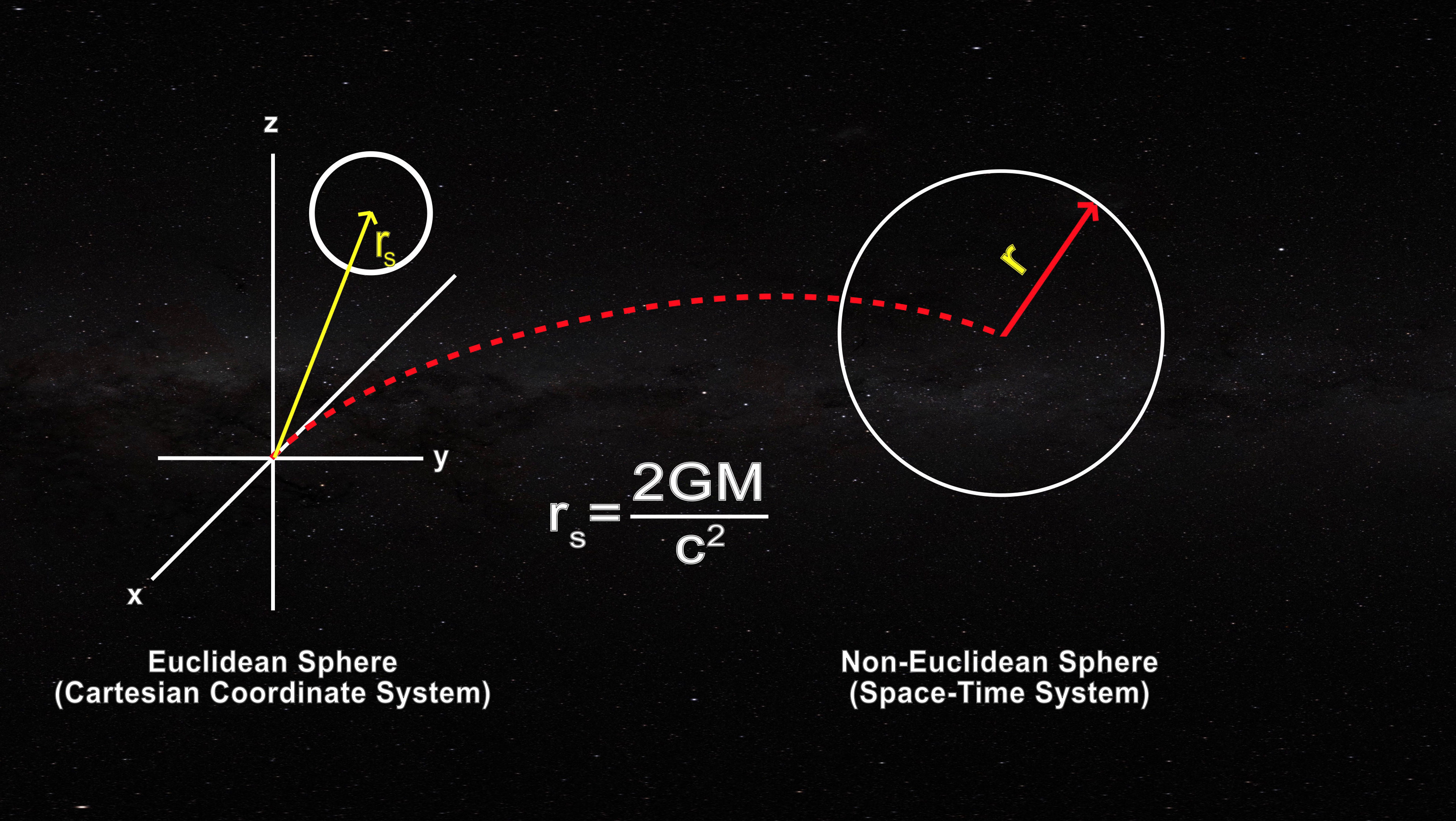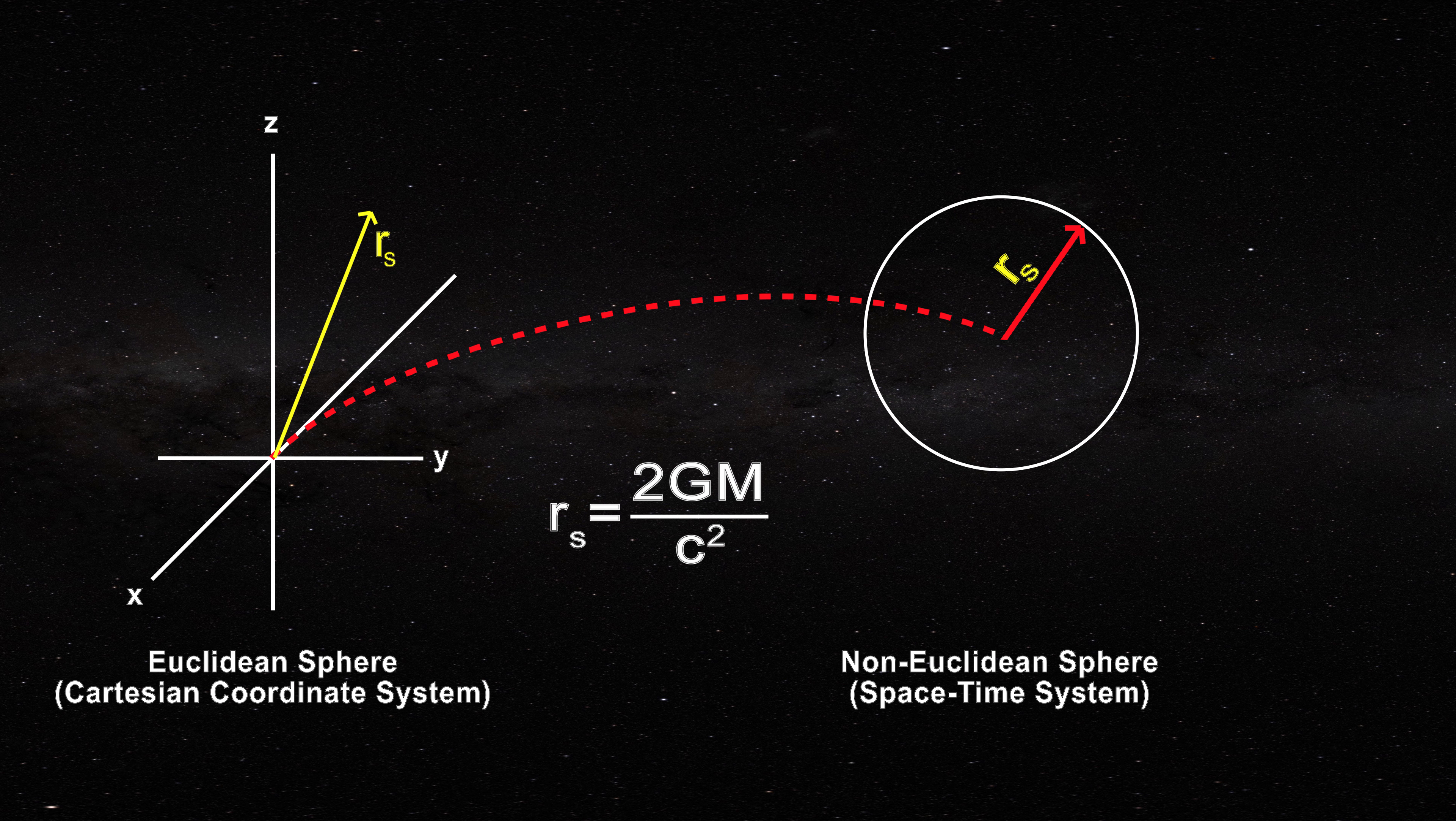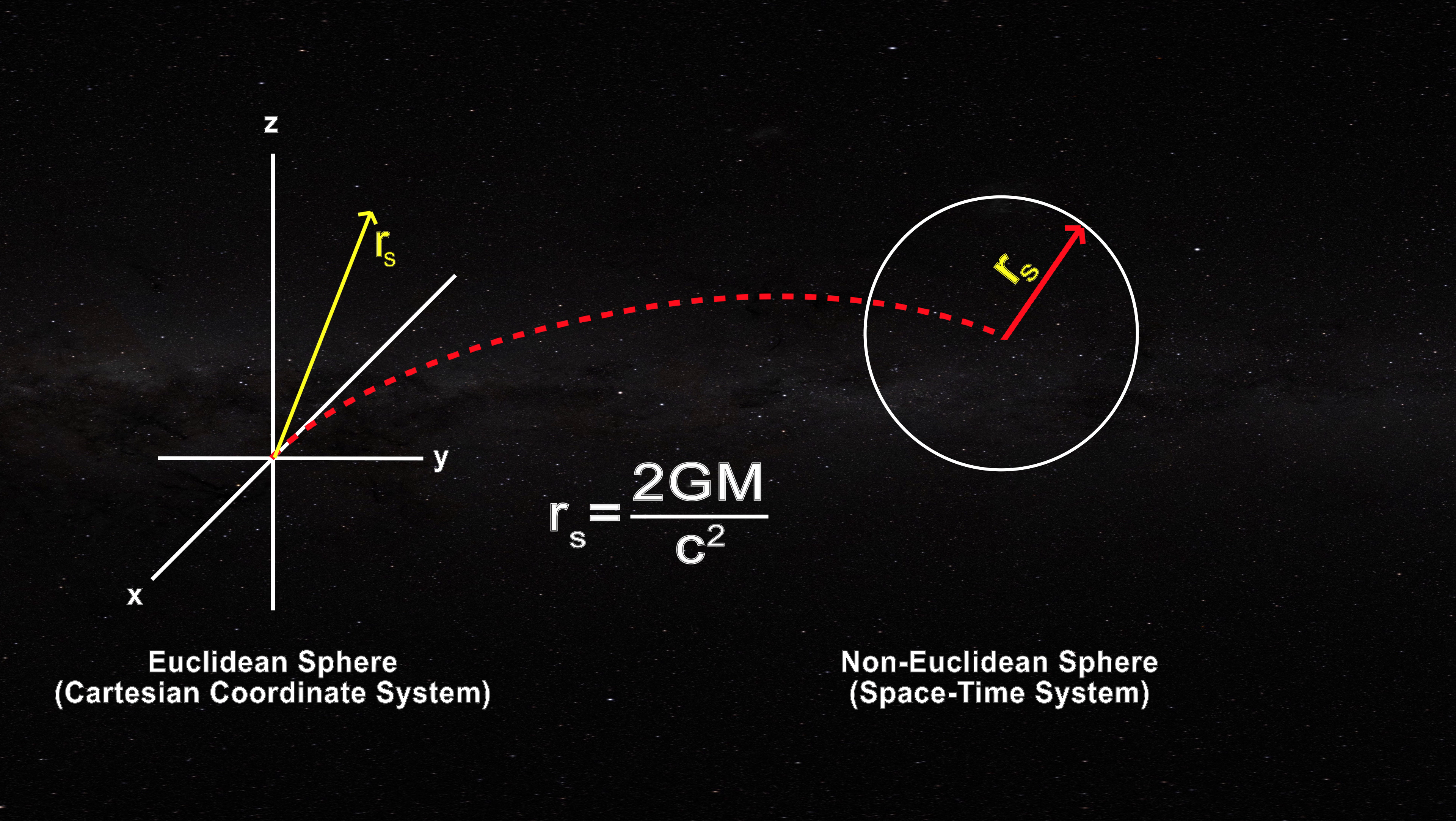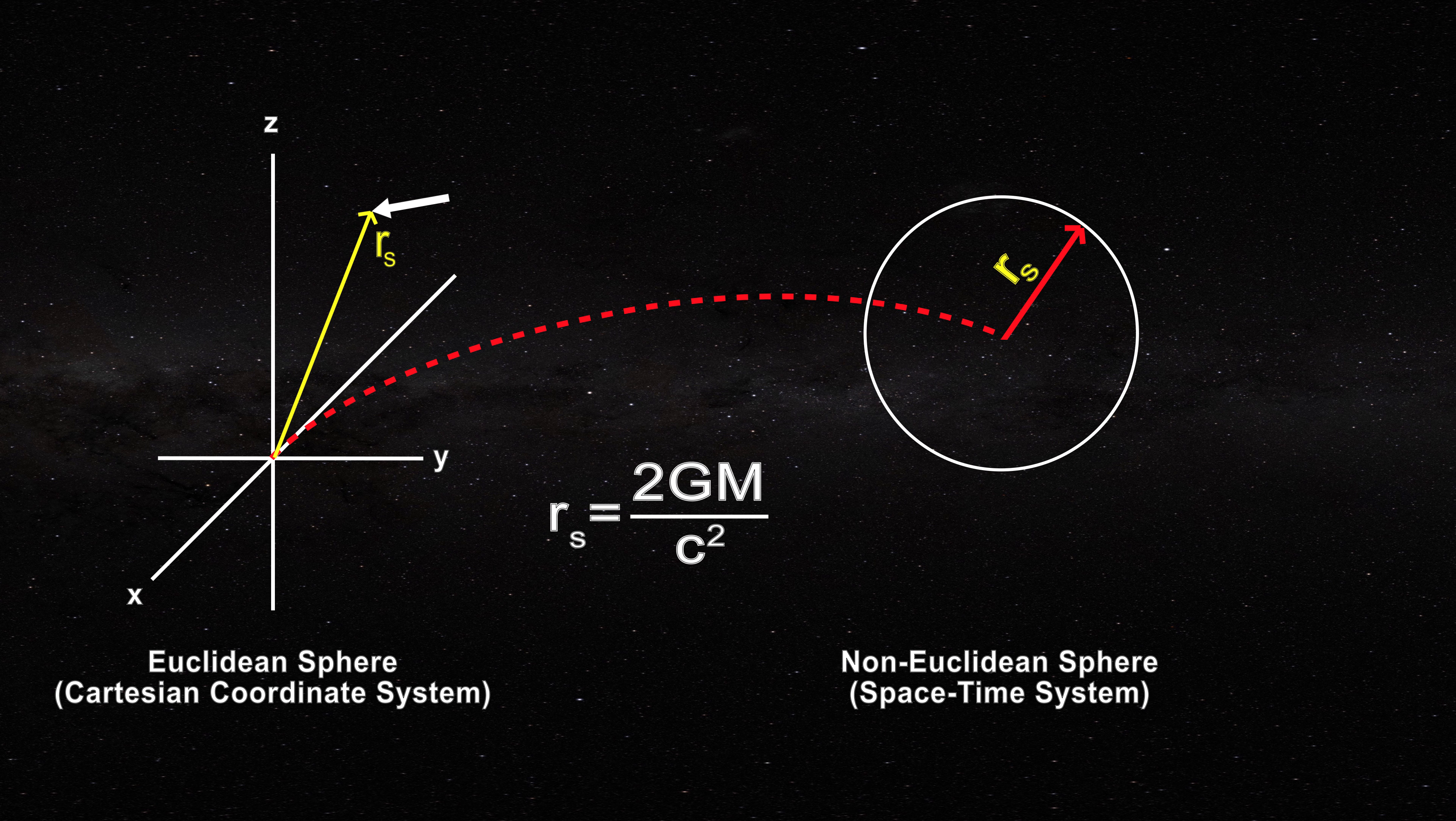Note in the figure that as the radius rho of the Euclidean sphere approaches zero, little r approaches the value of the so-called Schwarzschild radius. However, the center of the foundational Euclidean sphere is now located at the tip of the radius little r equal to the Schwarzschild radius.